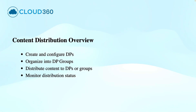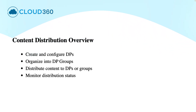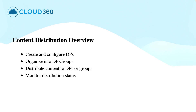Here is a high-level look at the content distribution process. First, you configure your distribution points and groups as required. Then you distribute the content — like applications, drivers, or operating system images — to either individual distribution points or distribution point groups. Finally, you monitor the distribution status to ensure successful delivery.